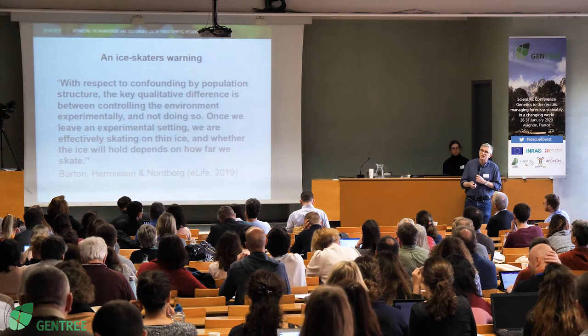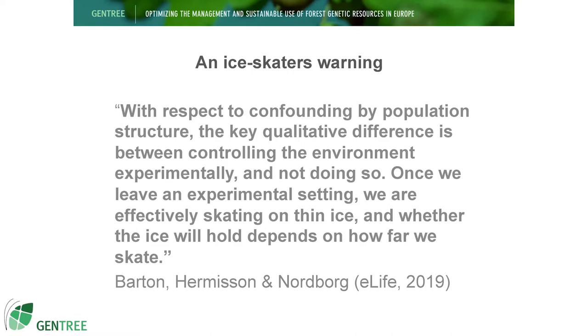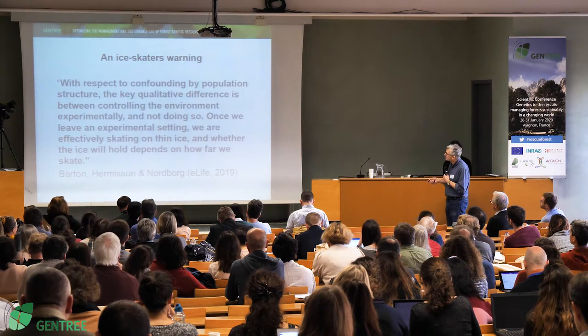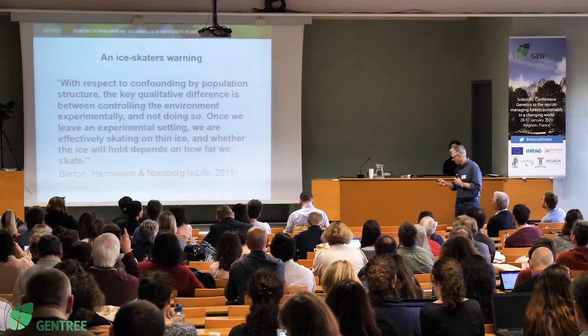Finally, I want to stress the importance of population structure confounding in association studies. The key qualitative difference is between controlling the environment experimentally and not doing so. Once we leave an experimental setting, we are effectively skating on thin ice, and whether the ice will hold depends on how far we skate. Even with massive datasets like in humans, population structure can overturn conclusions — as seen in two papers that reversed earlier claims of selection on height in humans; it was population structure, not selection.